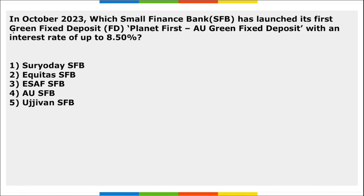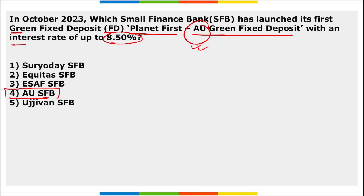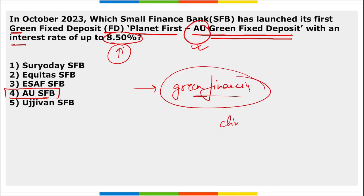Which small finance bank launched India's first green fixed deposit — Planet First AU Green Fixed Deposit — with an interest rate of up to 8.5%? It is AU Small Finance Bank. The amount allocated in this fixed deposit will be used for green financing to enhance climate sustainability.